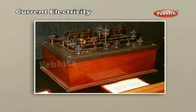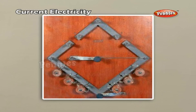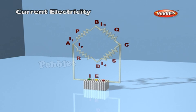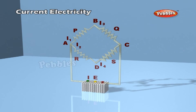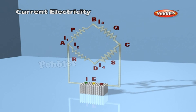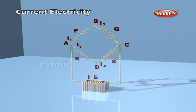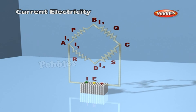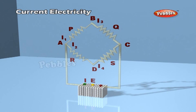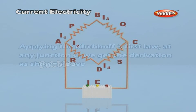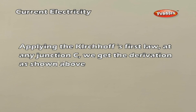Wheatstone Bridge is an electric circuit used to compare resistances or find the value of an unknown resistance. It consists of four resistances, a battery, and a galvanometer. When no current flows through the galvanometer, the bridge is said to be balanced. Four resistances P, Q, R, and S are joined to form the four sides of a quadrilateral. Four junctions are formed at A, B, C, and D. A battery of EMF epsilon is connected between junctions A and B, and a galvanometer G is connected between junctions C and D. The galvanometer deflects whenever current passes through it, showing null deflection only when the bridge is balanced. Applying Kirchhoff's first law at junction C gives the derivation as shown in the figure.